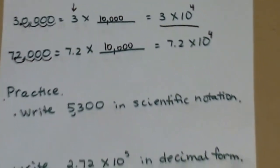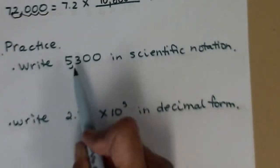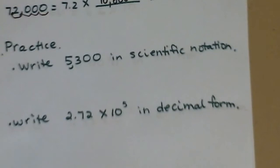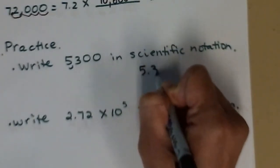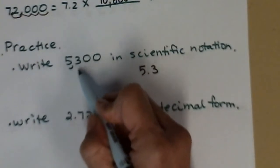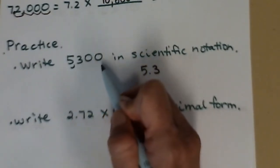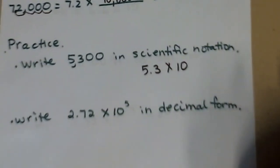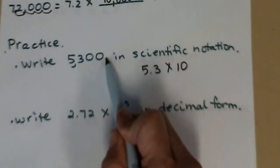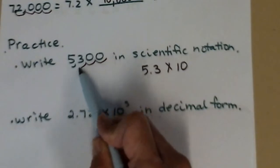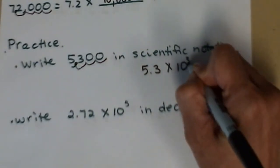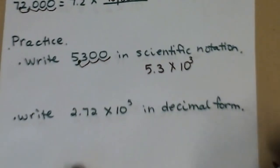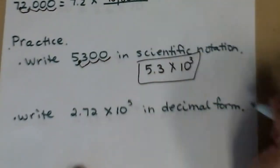Let's take a look at two practice questions. Let's write 5,300 in scientific notation. So remember we have to stop when we get to a number between 1 and 10. So you might even just write down 5.3, the number that we can get to between 1 and 10. So it will be 5.3 times 10 to a power and we just have to figure out what that power is. So using our swoop method, we swoop 1, 2, 3 swoops. 5.3 times 10 cubed is how we write that in scientific notation.